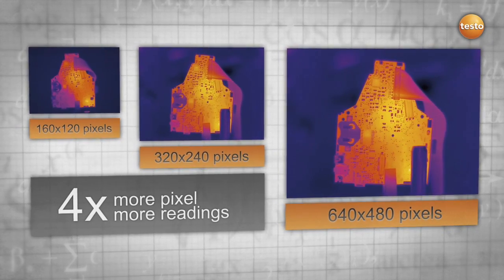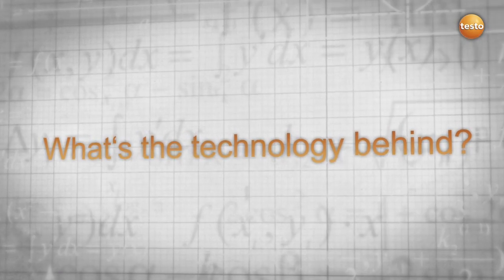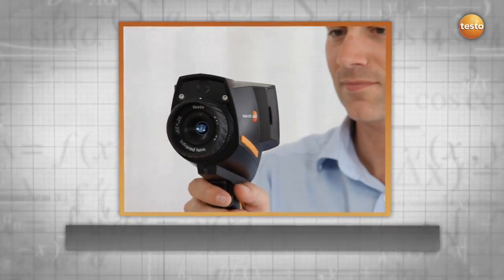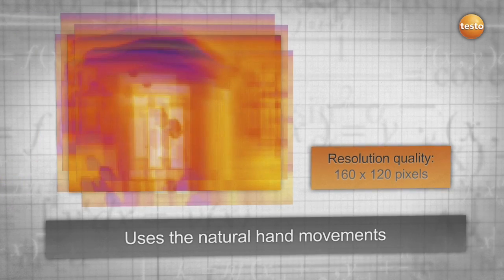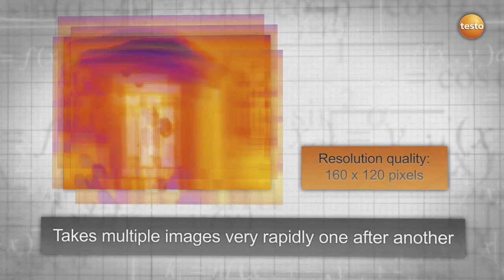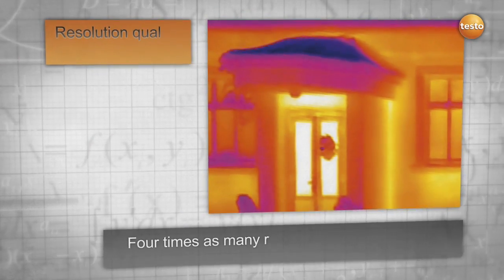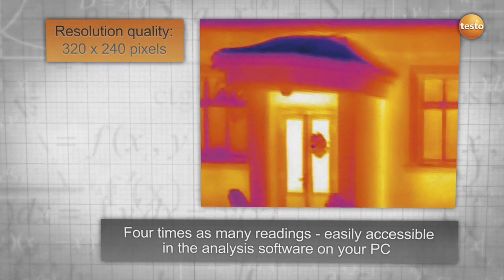The Super Resolution technology uses natural hand movement and takes multiple images rapidly, one after another, which are slightly shifted to each other. Using an algorithm, these images are then calculated to obtain one image. The result: four times as many readings and a much better thermal image resolution.